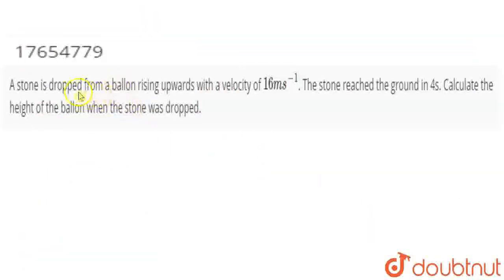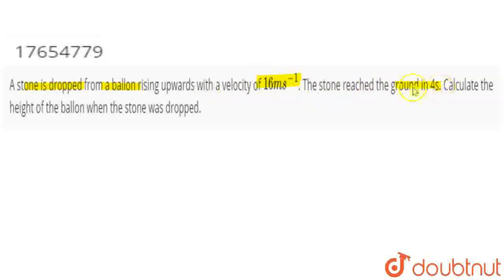Hi students. A stone is dropped from a balloon rising upward with a velocity of 16 meters per second. The stone reached the ground in 4 seconds. Calculate the height of the balloon when the stone was dropped.